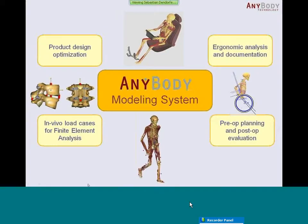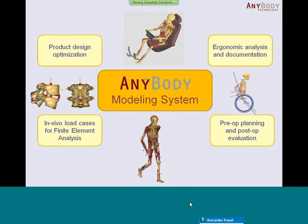The AnyBody modeling system has four big application areas nowadays. The first is product design and optimization — this can be almost everything related to the human body, from car seats to implants or prostheses. The next big topic is ergonomic analyses and documentation: how good is your workplace, what's the best motion for a certain task. The third is pre-operative planning and post-operative evaluation. And the fourth is creating in vivo load cases — the real physiological loading for finite element analyses. These are the main topics the AnyBody modeling system addresses nowadays.